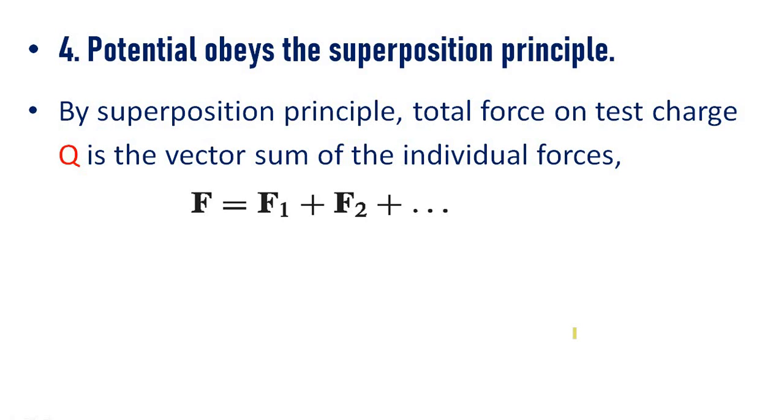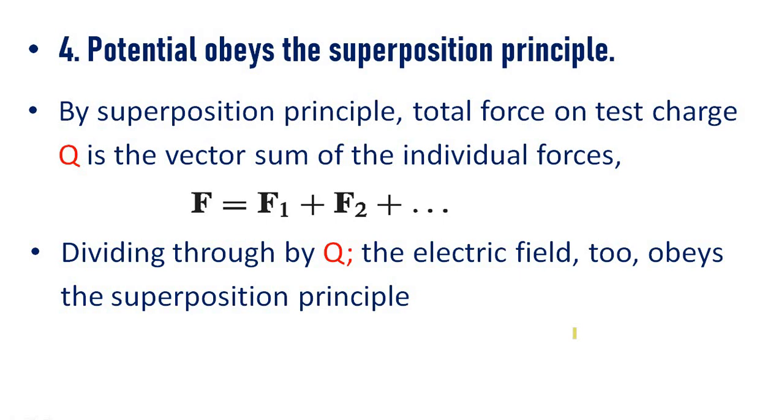Now, we can divide this F by Q and we will get E. Divide throughout the equation by Q, we will get the electric field. And we know that electric field obey the superposition principle. That is E equal to E1 plus E2 plus etc.